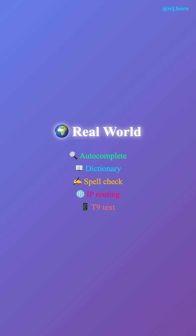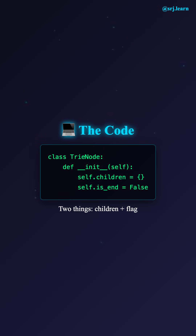Now let's look at real-world use cases. The most common one is autocomplete — you type 'CA' in a search box and the trie instantly gives you suggestions like cat, car, cafe, cake, and so on. Dictionary lookup is another use case. Spellcheckers use tries to quickly verify if a word exists. IP routing tables use tries to match IP prefixes. Even old phone keyboards with T9 predictive text use tries.